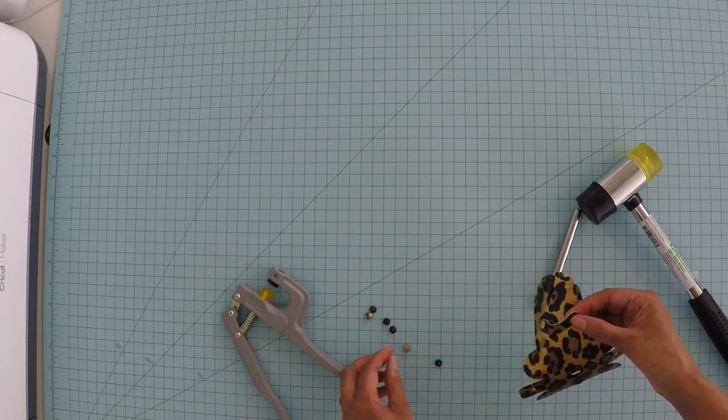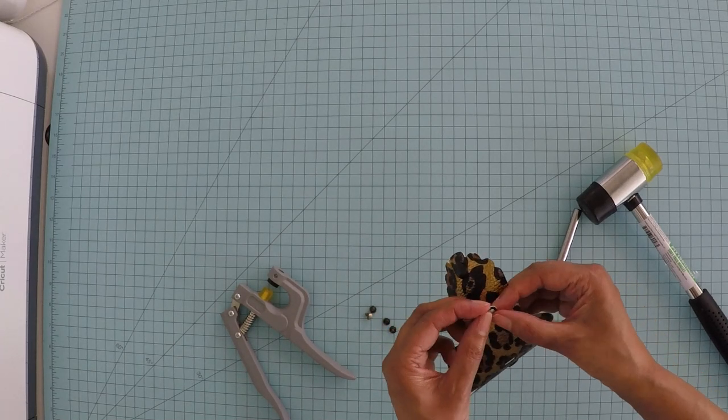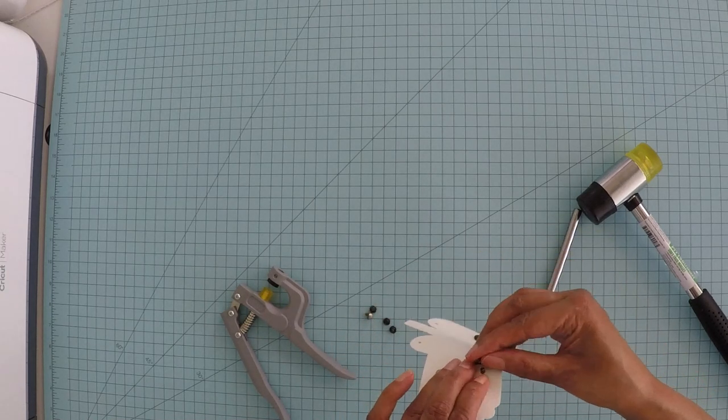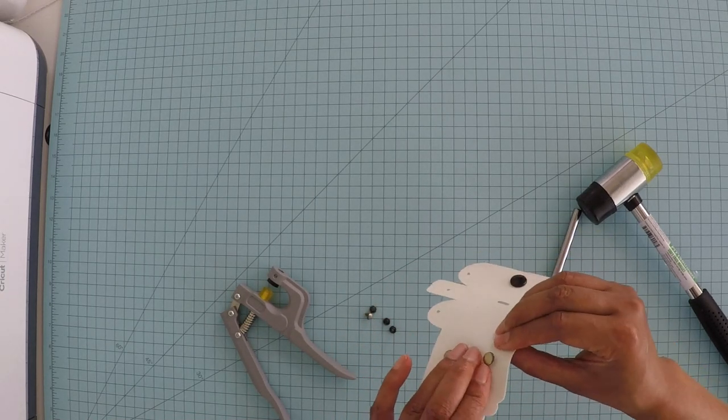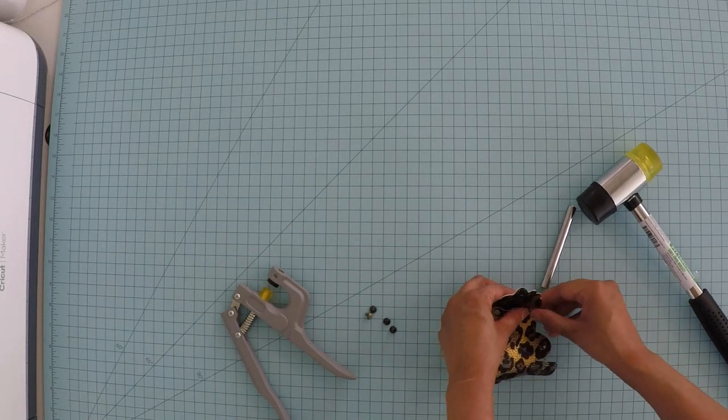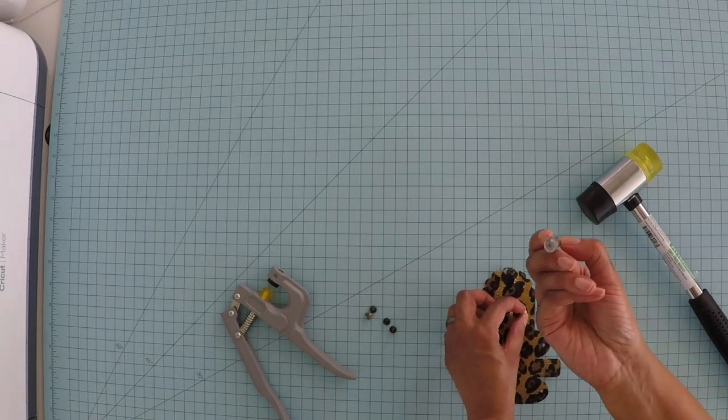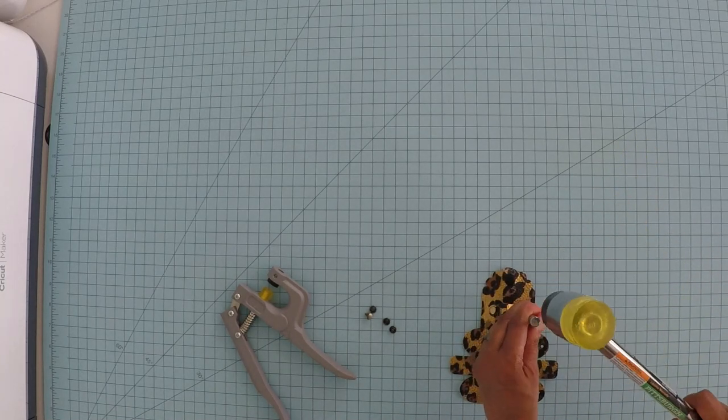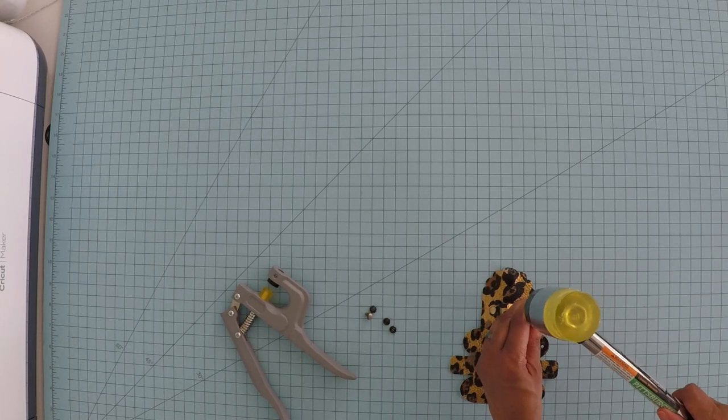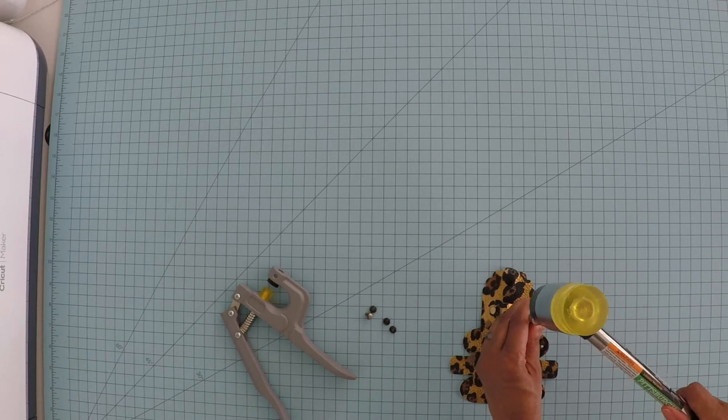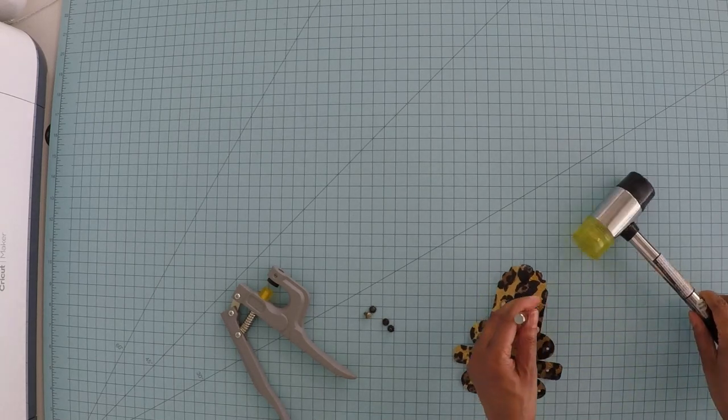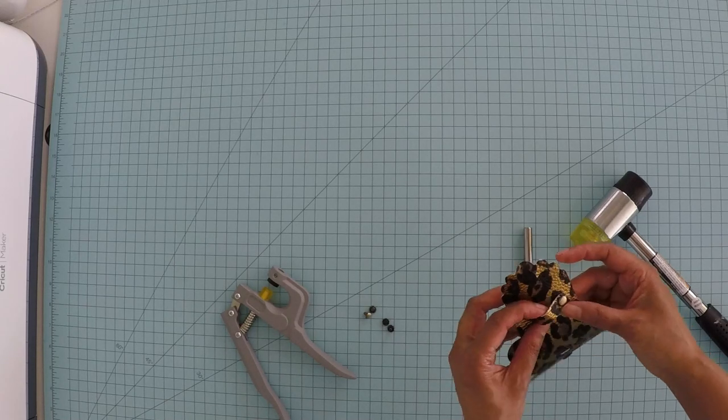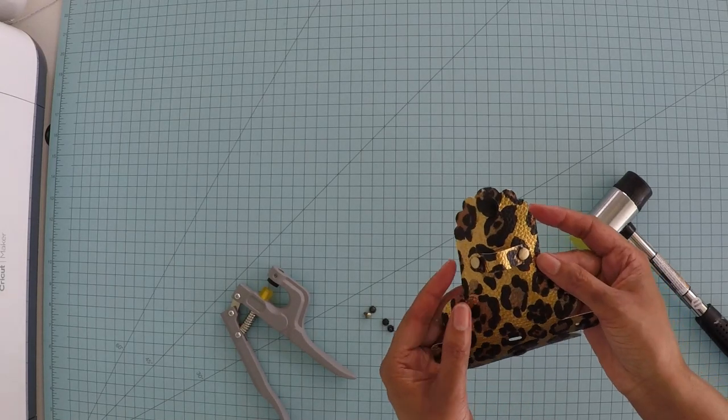Now that's on securely. We're going to do the same thing for the other side. Take the rivet, place it inside the hole, put it in that hole, take the cap or the other side of the rivet, snap it down, put it on here, take this side, put it directly on top of the rivet, and hit it four times, three or four times. You may even hit it only twice.